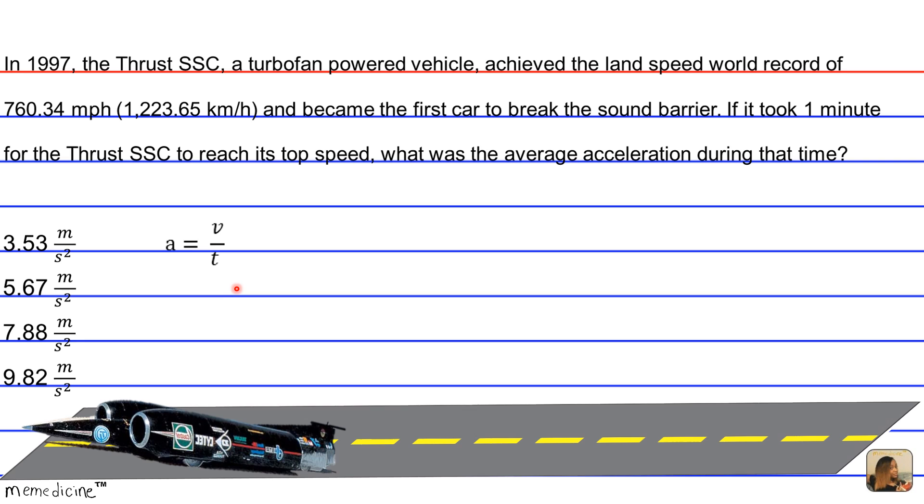So here goes our dimensional conversion. We start out with 1,223.65 kilometers per hour, and we want to convert the time to seconds, so the hour dimensions cancel out. One hour is equivalent to 3,600 seconds.